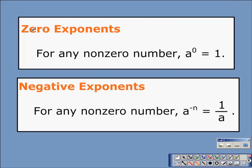First, we'll talk about zero exponents. We saw in the previous pattern that 2 to the zero gives us one. Any non-zero number raised to the zero power is equal to one. And for negative exponents, for any non-zero number, a to the negative n is equal to one over a to the n. We're going to see how to use these zero and negative exponent properties to simplify some expressions.